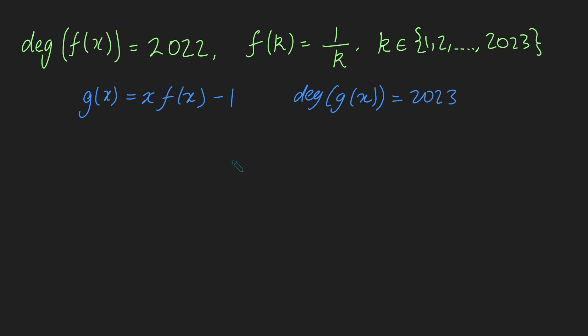Okay, and what else can I say about g of x? Well, I can actually give you all 2023 of its roots, and we're going to use this fact over here. So, let's just take 7, for example. I claim that the roots of g of x are all the positive integers from 1 up to 2023. Let's see why. What is g of 7? Well, that's going to be 7 times f of 7 minus 1. But f of 7, we know, is just 1 over 7, and so this is just 7 times a 7 minus 1, which, of course, is 0. And so, that works for 7, but it also works for all the other positive integers between 1 and 2023.